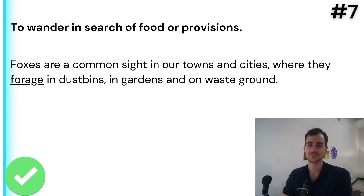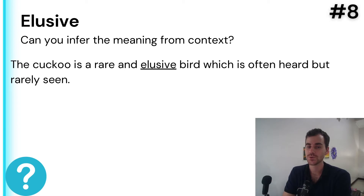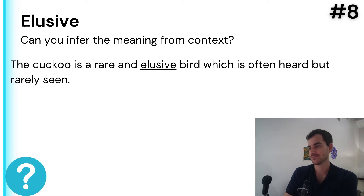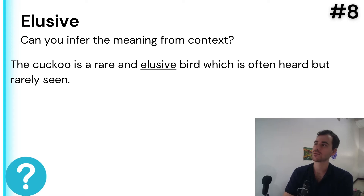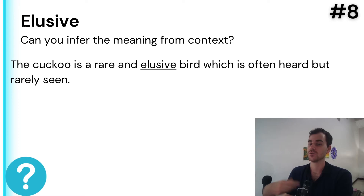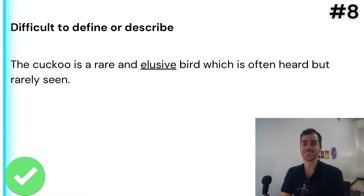Number eight: 'elusive.' 'The cuckoo is a rare and elusive bird, which is often heard but rarely seen.' We look at the other information: it's rare, it's often heard but rarely seen. So 'elusive' has something to do with being hard to see. It's also an adjective — what kind of bird? An elusive bird. So 'elusive' means difficult to define or describe — hard to find or observe.